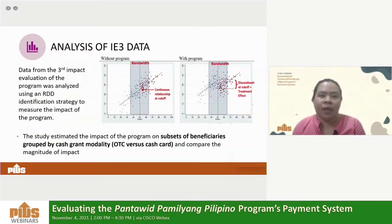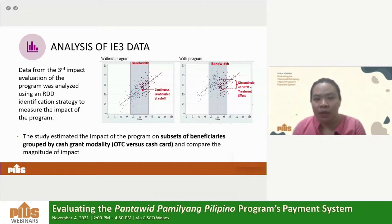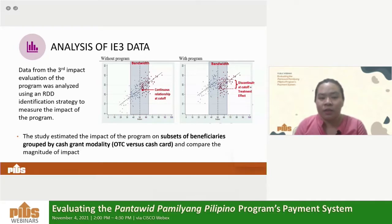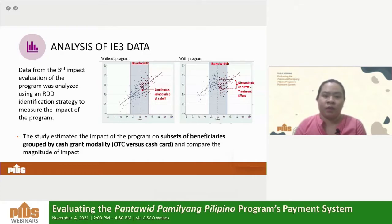To explain what we did with the third wave impact evaluation data: the research team compared the magnitude of impact of the program on subsets of beneficiaries grouped according to their cash grant modality. We compared program impact on two subsets — the group that received cash grants through over-the-counter transactions, and the group that received cash grants through cash cards or ATM cards.